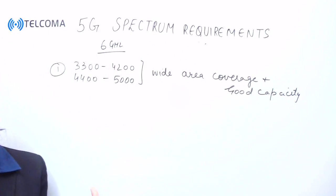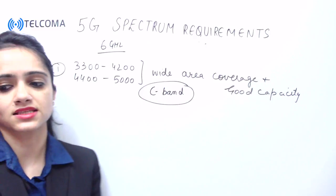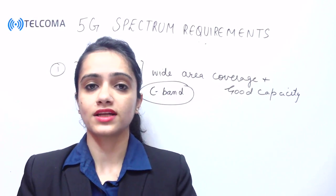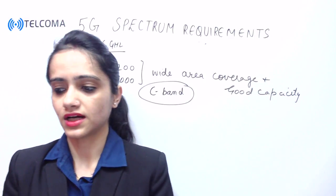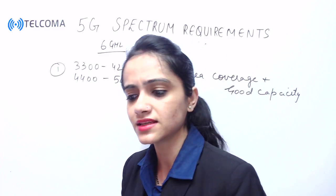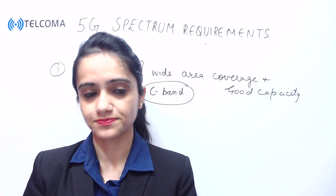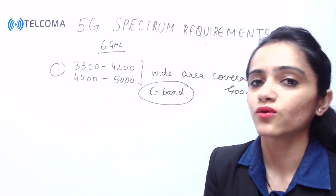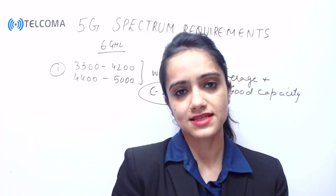We call it the C-band and will discuss it in detail in our next class. A 100 megahertz continuous assignment is required for 5G so that it can support 100 Mbps. Frequencies below 2 gigahertz will continue to be essential to extend mobile broadband user experience in wider areas and deeper indoor coverage. URLLC and mMTC will also extend with low frequencies below 2 gigahertz. This is all about 5G spectrum requirements — we will continue with the bands in our next class. Thank you.